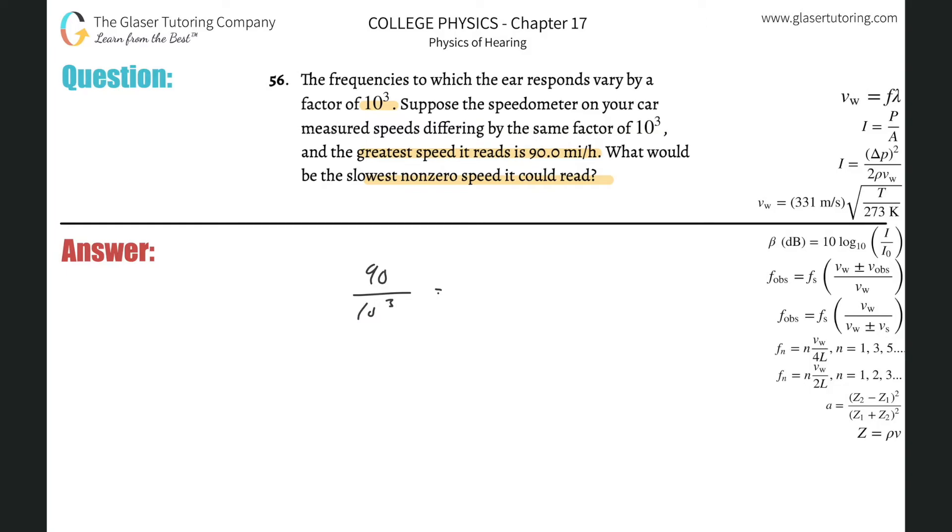Right? So that's basically going to be, this is similar to saying this is 90 times 10 to the minus three, if you want to do little rules of exponents here. And then we can simply manipulate this so it's 9 times 10 to the minus two.